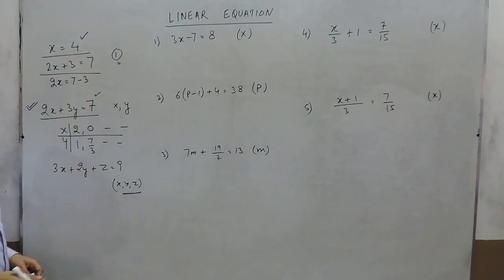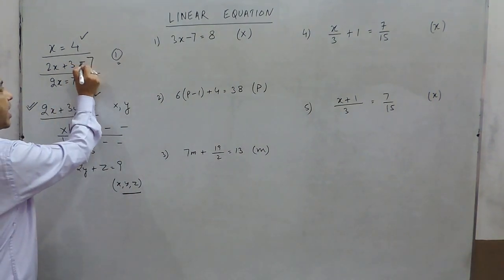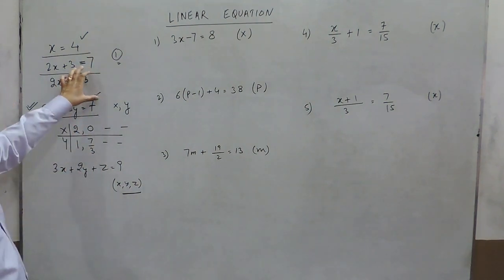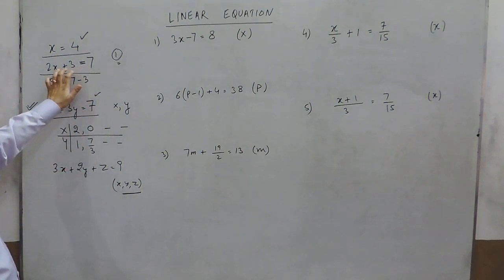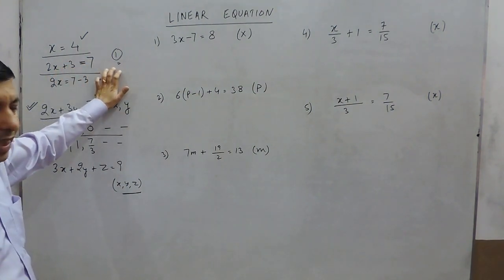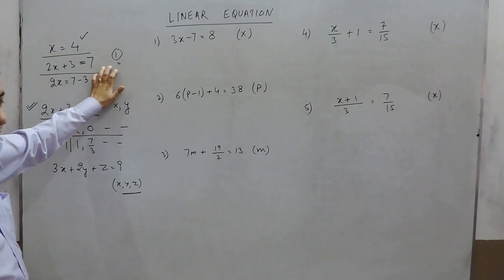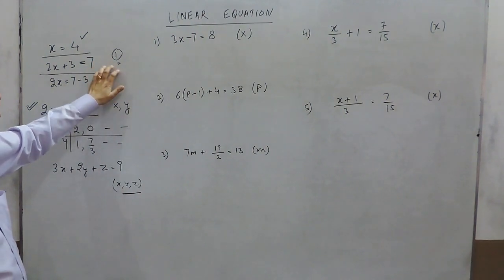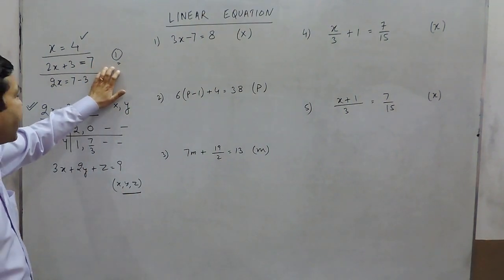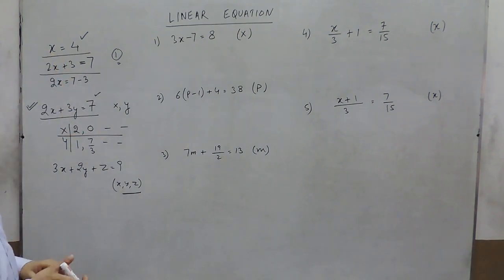The key rule is: whenever there is an equality sign, if a term moves from the left hand side to the right hand side, a positive sign changes into negative. Likewise, moving from right to left, positive becomes negative and negative becomes positive.